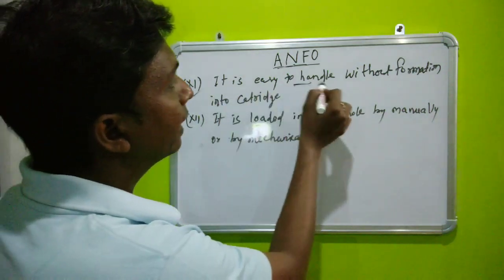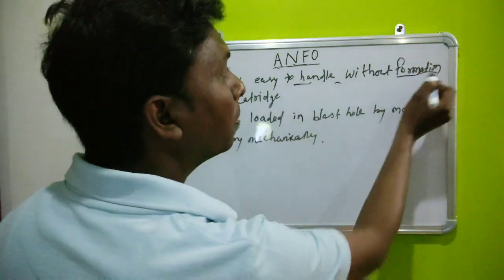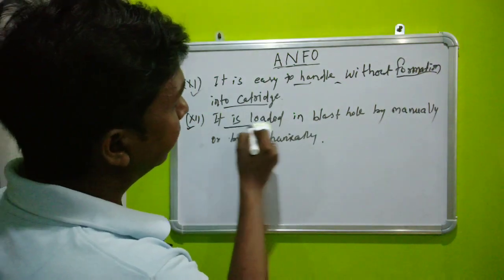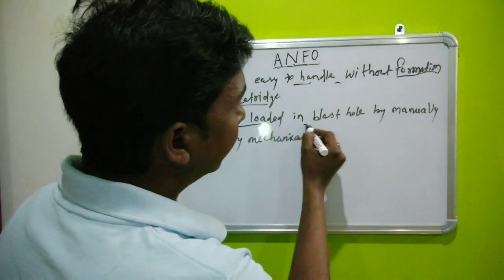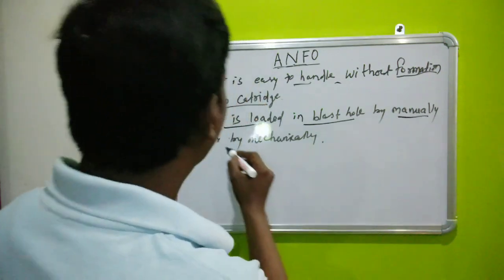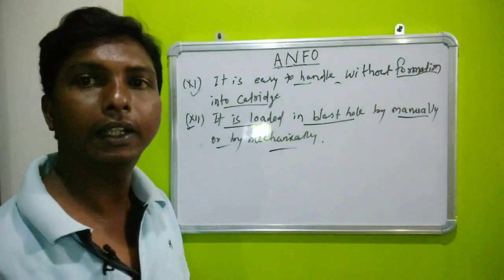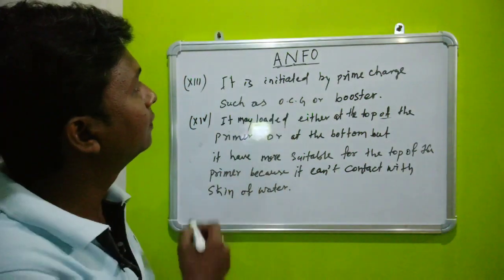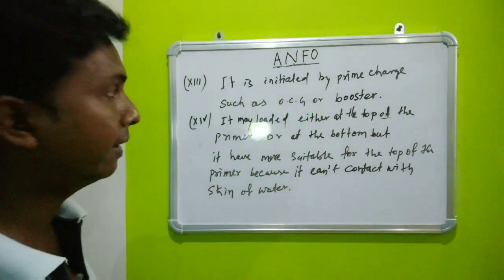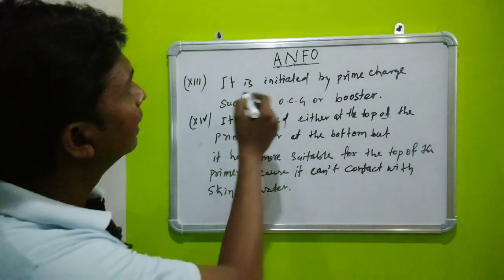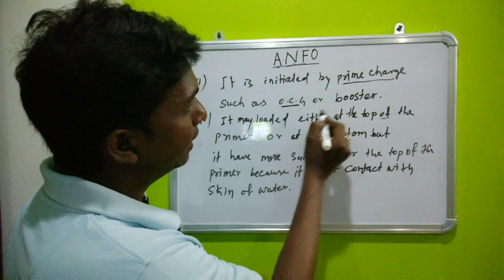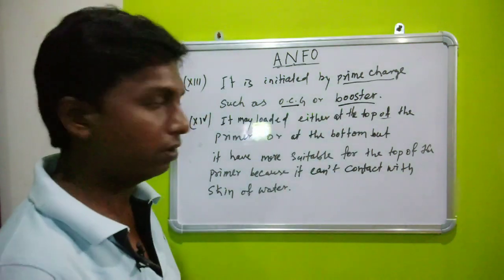It is easy to handle without formation into cartridge and is loaded in blast holes manually or mechanically. Since ammonium nitrate is not initiated by itself, it is initiated by a primer charge such as OCD or by a booster.